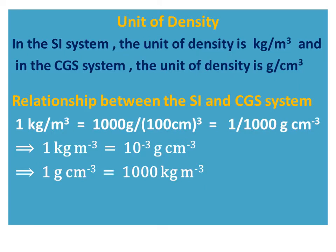Unit of Density. In the SI system, the unit of density is kilogram per meter cube, and in the CGS system, the unit of density is gram per centimeter cube.